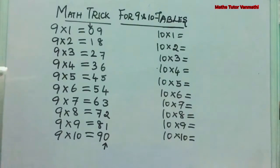See? 9 1s are 9, 9 2s are 18, 9 3s are 27, 9 4s are 36, 9 5s are 45, 9 6s are 54, 9 7s are 63, 9 8s are 72, 9 9s are 81, 9 10s are 90.